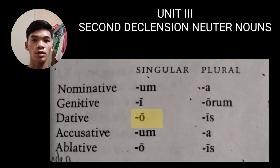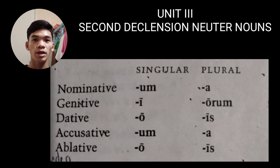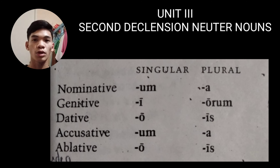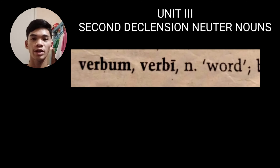The endings of the second declension neuter nouns are as follows. For singular nominative, the ending is -um. For singular genitive, the ending is -i. For singular dative, the ending is -o. For singular accusative, the ending is -um. For singular ablative, the ending is -o. For plural nominative, the ending is -a. For plural genitive, the ending is -orum. For plural dative, the ending is -is. For plural accusative, the ending is -a. For plural ablative, the ending is -is.